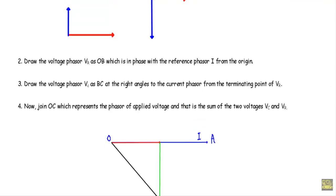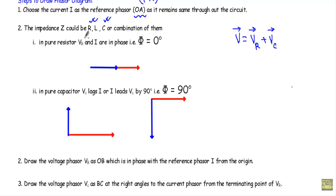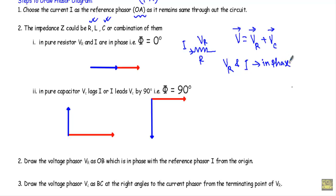In the phasor diagram, OA represents our current phasor I. In case of a pure resistor, the voltage drop VR and current I remain in phase — that means the angle between VR and I is zero degrees, so they go in the same direction. Therefore the voltage across the resistor VR will also go in the same direction as the current phasor I.